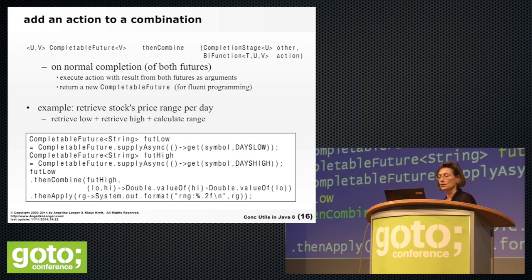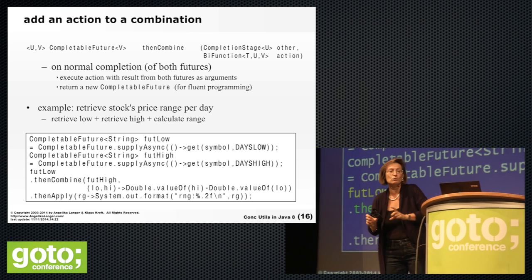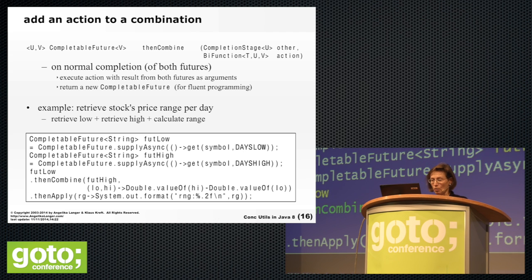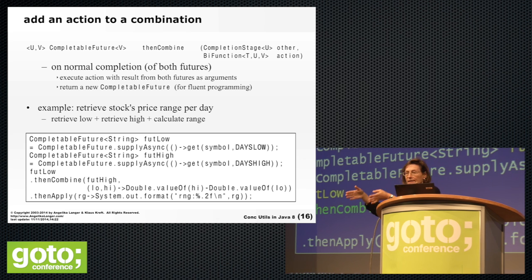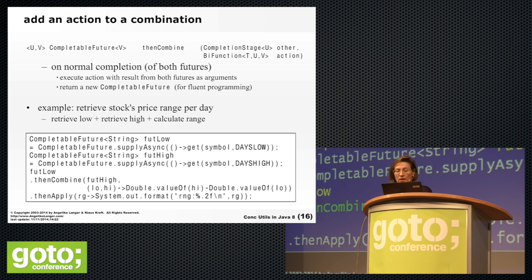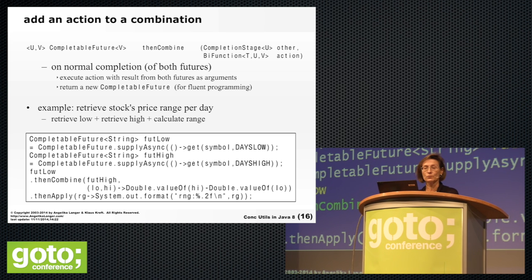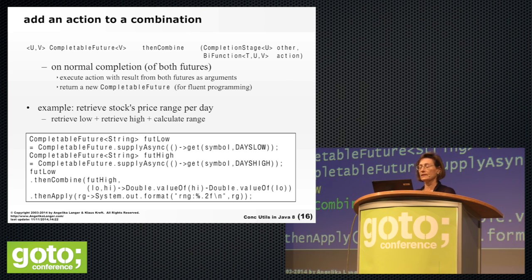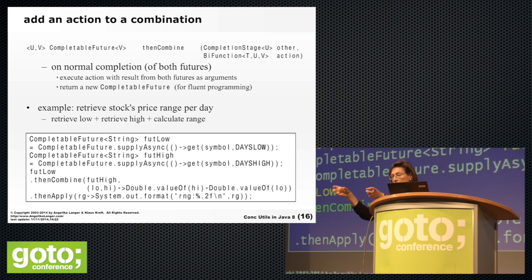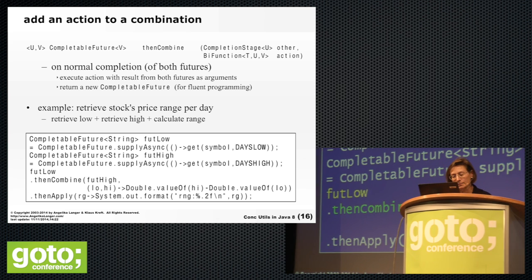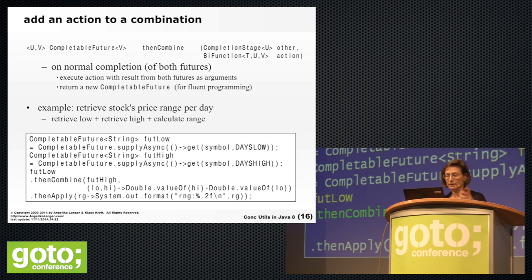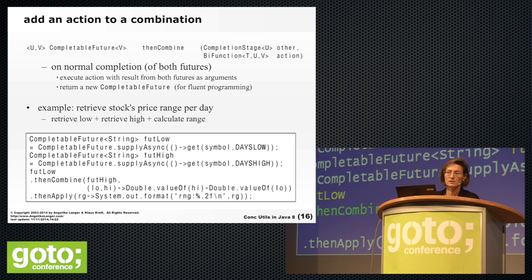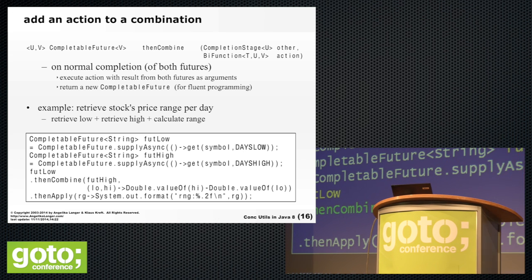There are also combination functions. If you want to react on completion of two different futures, there is thenCombine. For example, you can have two futures — one for getDailyLowestRate and one for getDailyHighestRate on a stock symbol — then thenCombine takes both results and produces something new: in this case the difference between daily low and daily high. The result is a CompletableFuture of double, on which you then apply a formatting function.